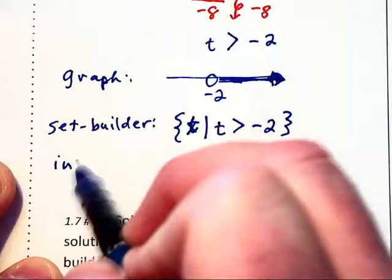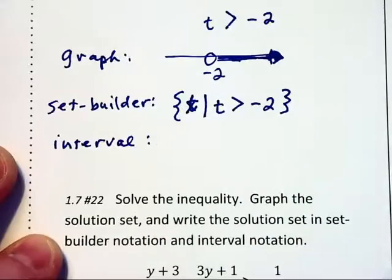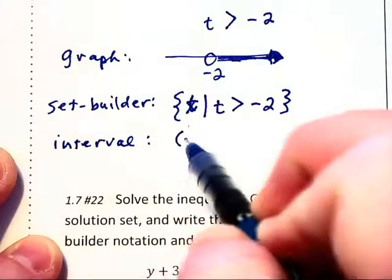In interval notation, we would write this as the interval from negative 2 to infinity.